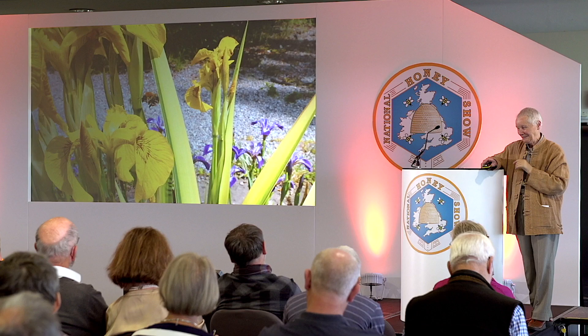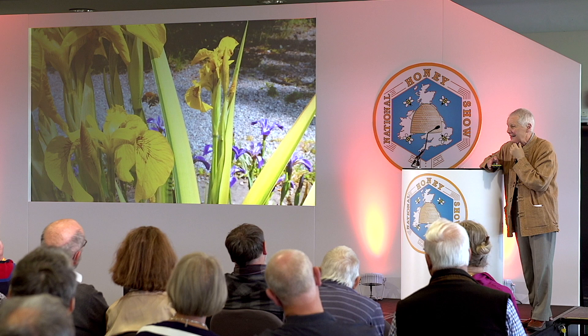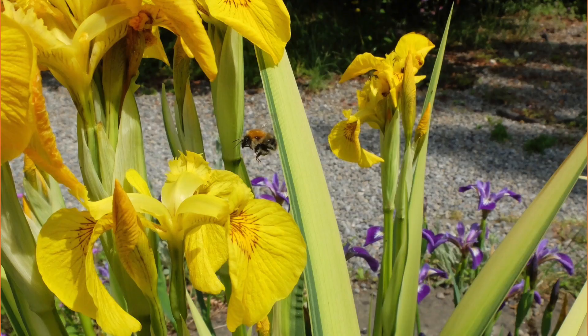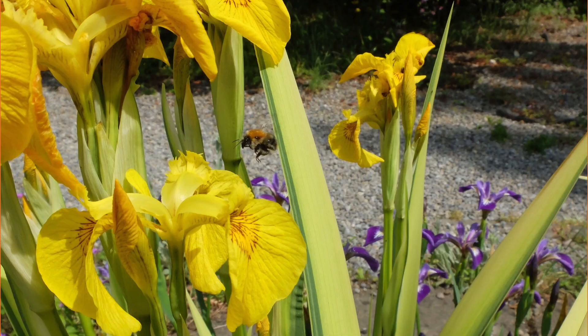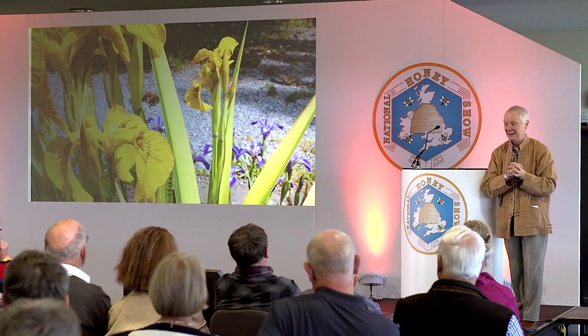Can somebody identify the bee? This is Bombus pascuorum — I call it the ginger bee. A very common bee, one of the six common bumblebees. This is actually Iris pseudacorus, the ordinary marsh iris. This is a real puzzle for a bee to get into — the nectaries are way down at the bottom. I've noticed the bumblebees can manage it, but I've almost never seen a honeybee on it — because a lot of the bumblebees have considerably longer tongues than our bees. But I love that picture because I'm very fond of my little ginger bees.